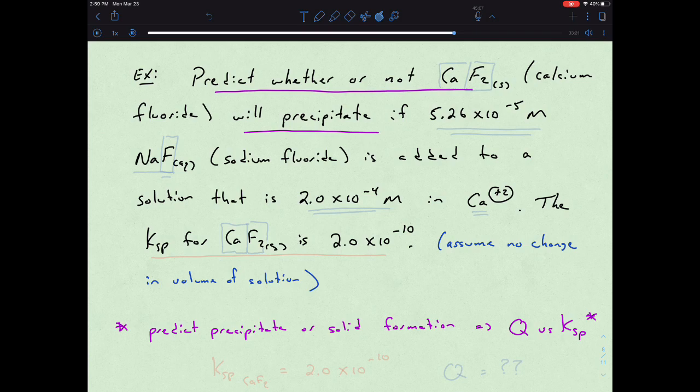So basically, we need to figure out both of those entities. We actually already know one of them. We do know the Ksp for the calcium fluoride is equal to 2.0 times 10 to the negative 10th. What we need to figure out is what is Q actually equal to.